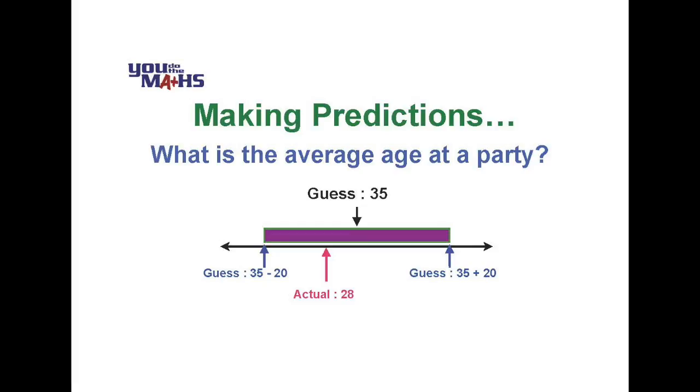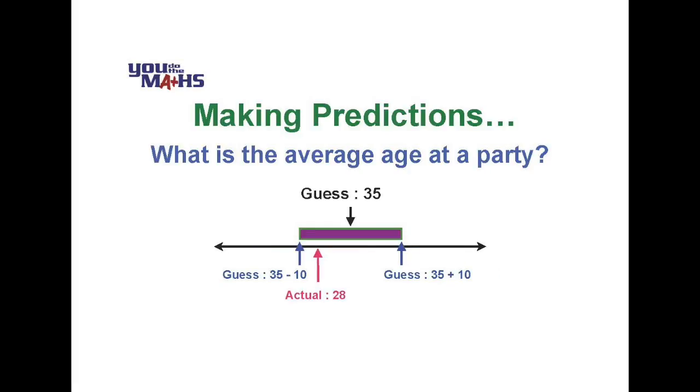Let's now decrease the error margin by 10 either side. So we're now talking about an interval which is 10 years less and 10 years more than our guess of 35. That means our range of ages goes from 25 to 45. While we can see that the actual age still exists within that band, when we make the guess we don't know that. So our confidence has been reduced.